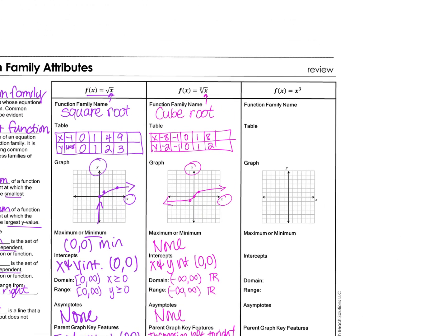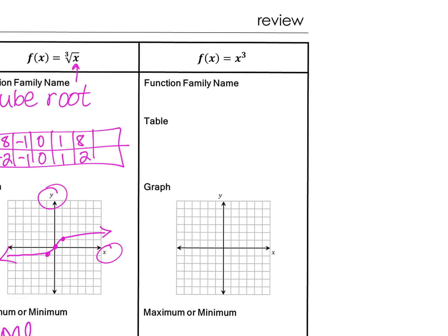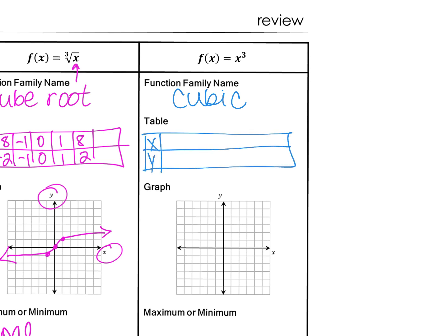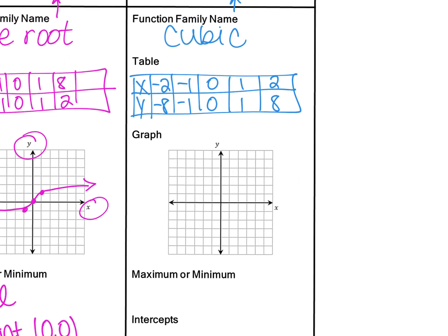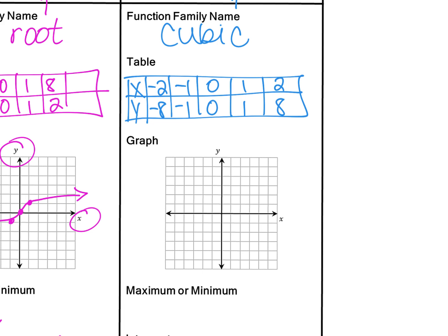Let's move on to x cubed, which is called cubic. Making a table: negative 2 cubed is negative 8. Negative 1 cubed is negative 1. 0 cubed is 0. 1 cubed is 1. 2 cubed is 8. Graphing the cubic: (negative 2, negative 8) goes off the graph, (negative 1, negative 1), (0,0), (1,1), and (2,8) goes off the graph. Notice this shape is not the same as the cube root — it's very similar but distinct.